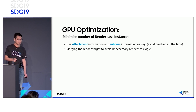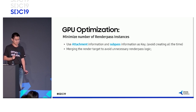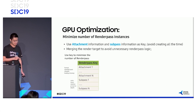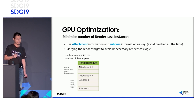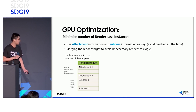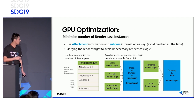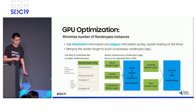Beyond empty render passes, from a performance perspective, we should also use as few render passes as possible. First, set up a key for render pass reuse — the key contains all attachment information and all sub-pass information. Second, merge render targets to avoid unnecessary render pass switches. Here are two examples from our engine: we merge the decal, particle, and translucent render targets together, and similarly merge the tone map and the scene render target. This reduces three render passes per frame.